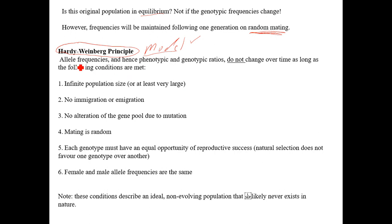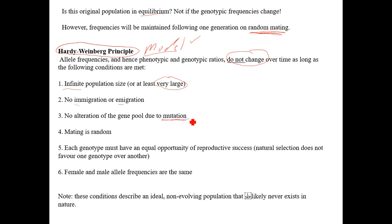Allele frequencies and the resulting genotypic and phenotypic frequencies would not change over time if certain conditions are met. To truly apply this model and have it be 100% accurate, you need an infinite — or at least very large — population size, no migration (no immigration or emigration), and no alterations in the gene pool due to mutations.